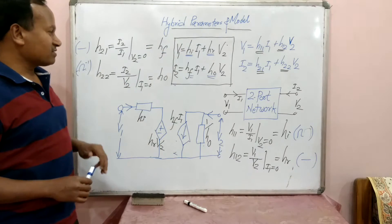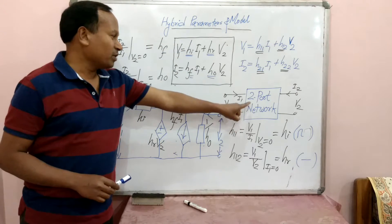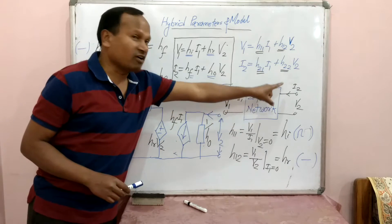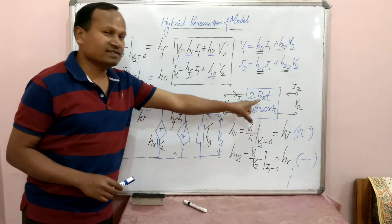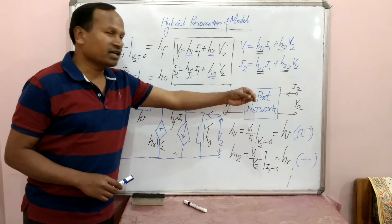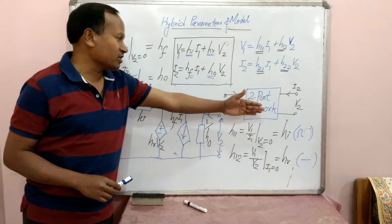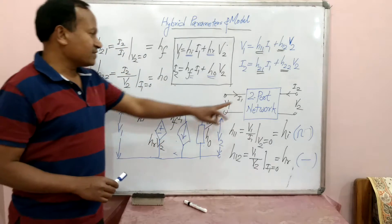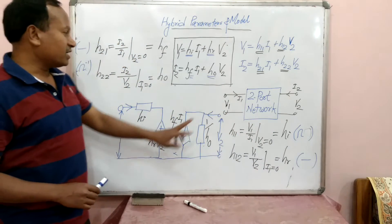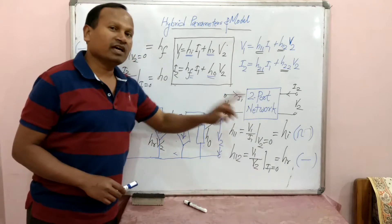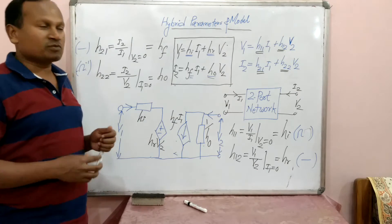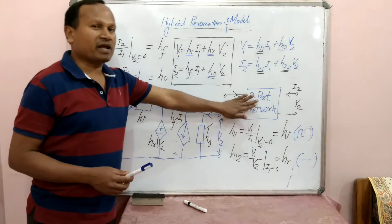We know there are two-port parameters. A two-port network has an input port with input voltage and input current, and an output port with output voltage and output current. A transistor is an example of a two-port network. In this standard two-port network, there are four variables: V1, I1, V2, and I2. All four variables are interrelated using some parameters, which are called two-port parameters.